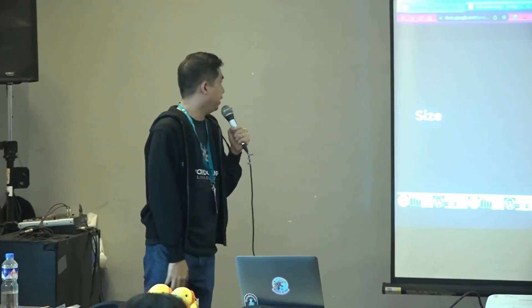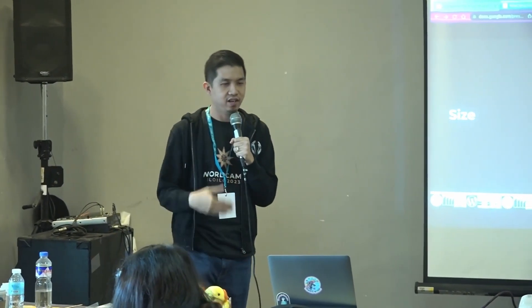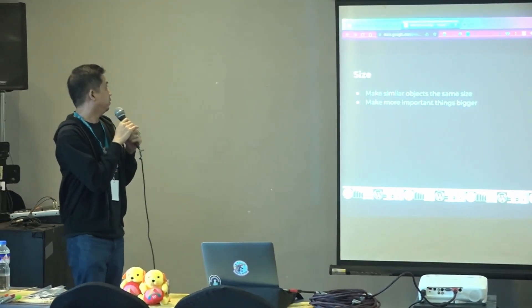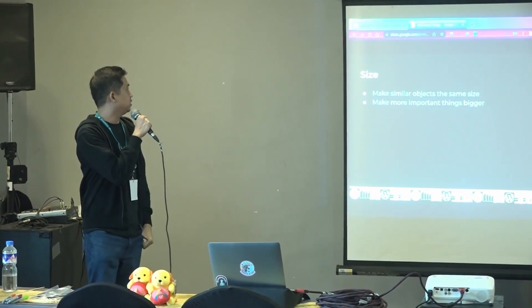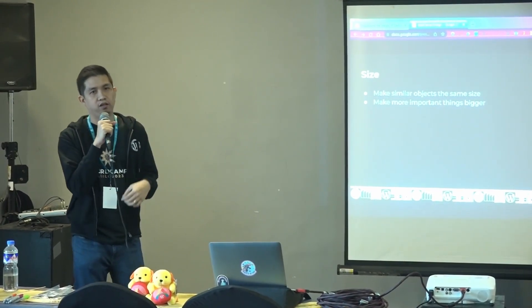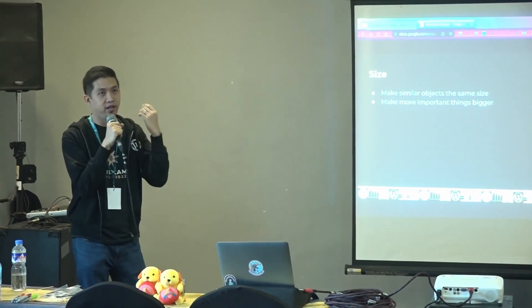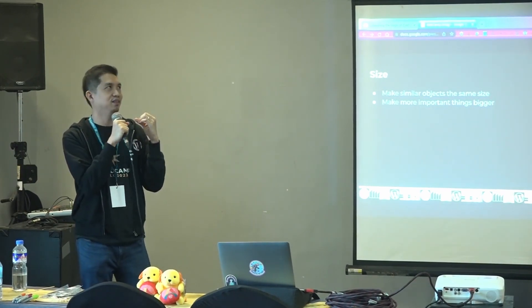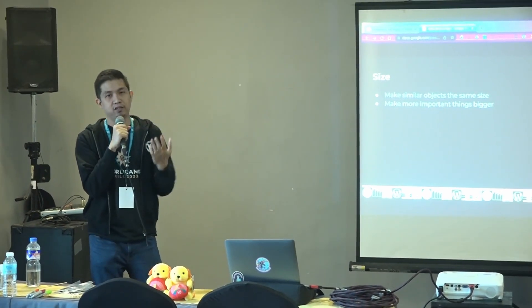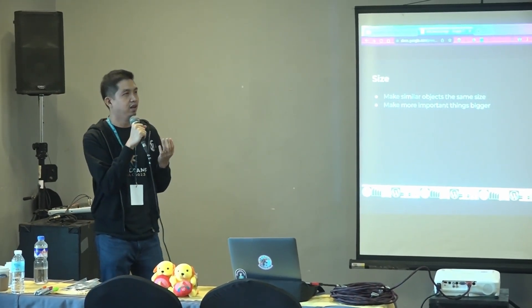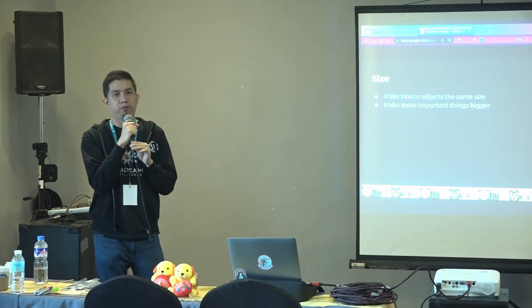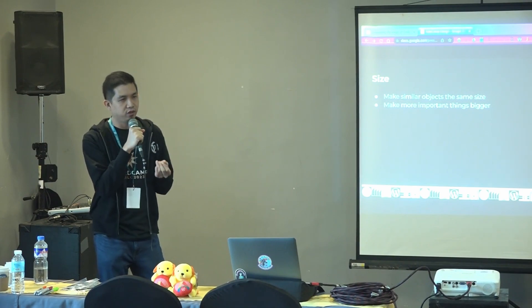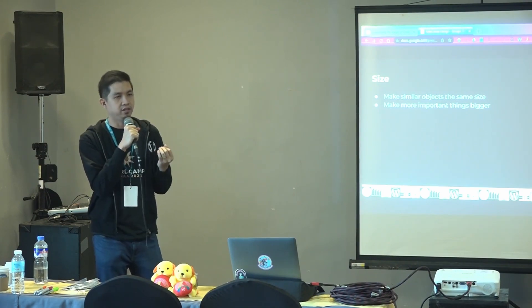The last thing is size — the size of your elements in your website. The first thing you have to think of is to make similar objects the same size. The human mind is trained to group things together that are of similar size and color. So if you have a list or a grouping of some sort, you try to make them the same size as much as possible.